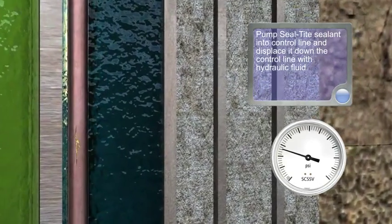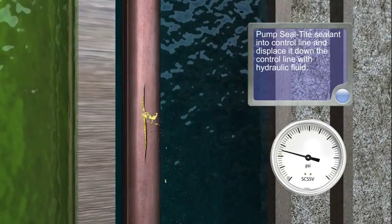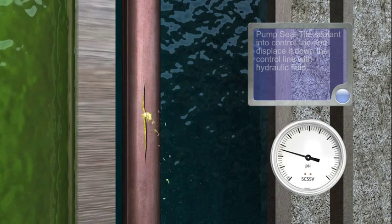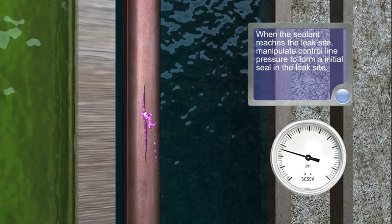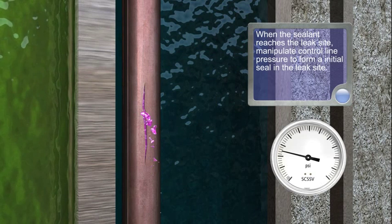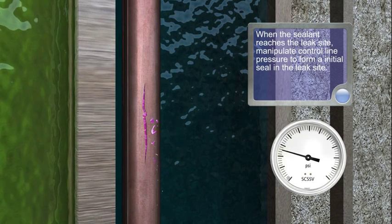Pump seal-tight sealant into control line and displace it down the control line with hydraulic fluid. When the sealant reaches the leak site, manipulate control line pressure to form an initial seal in the leak site.